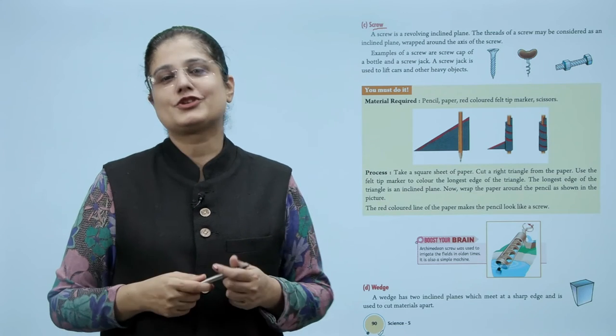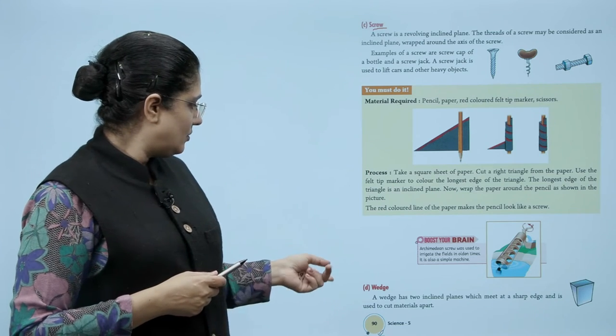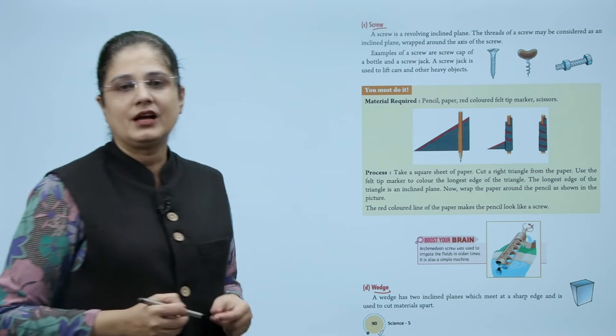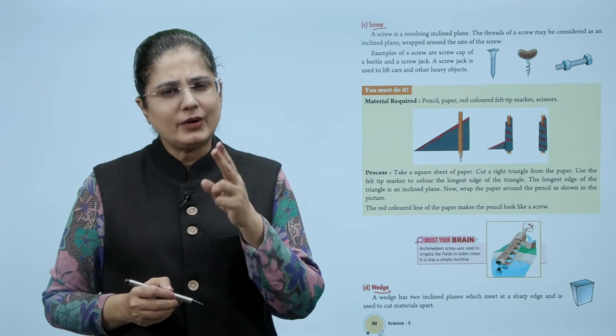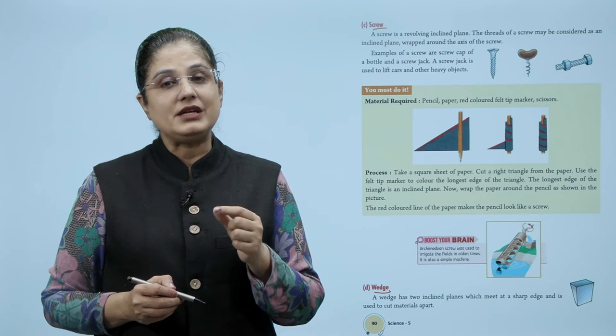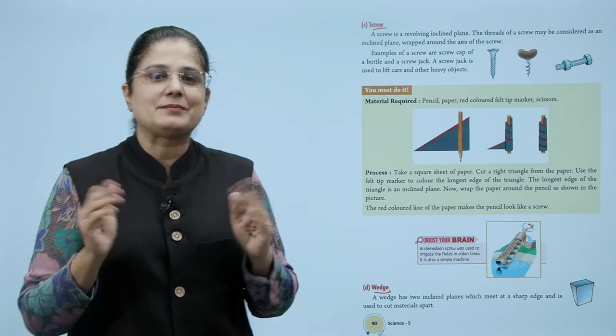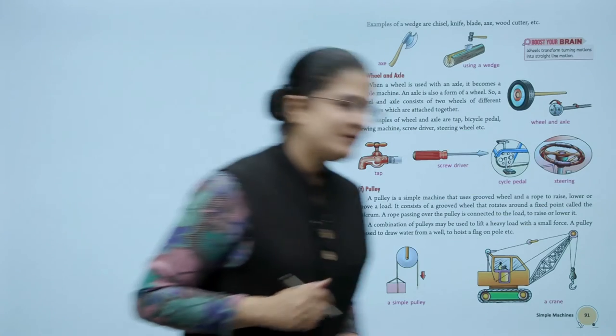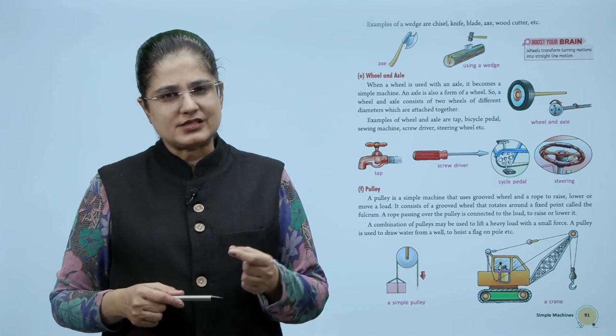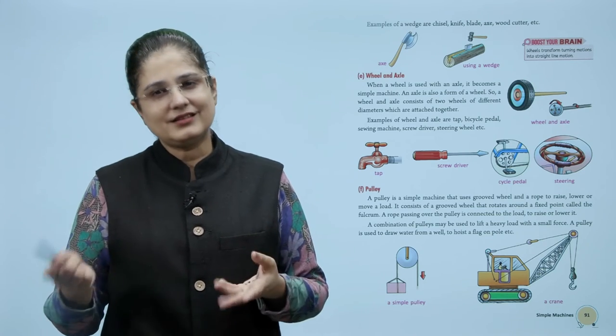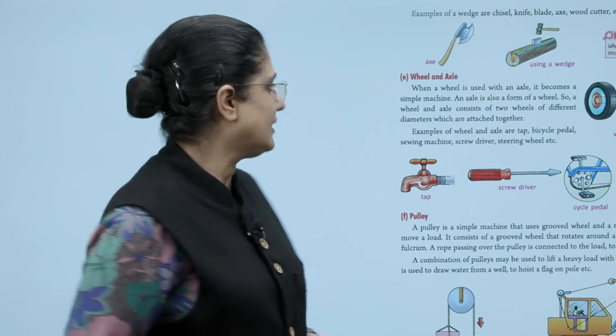Let us now look at a wedge. A wedge has two inclined planes which meet at a sharp edge and is used to cut materials apart. Examples of a wedge are chisel, knife blade, axe, and wood cutter.